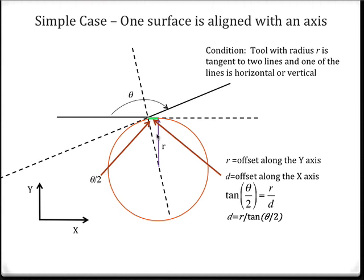The tangent of theta over 2 is going to be r over d, which corresponds to the green segment. Then we can solve for d. Now we know the offset in the x direction and we already have the offset in the y direction, so we can determine the location of the tool with respect to this vertex that corresponds to where those two surfaces meet.